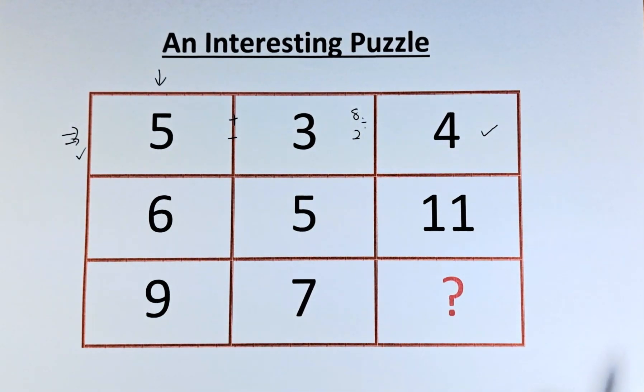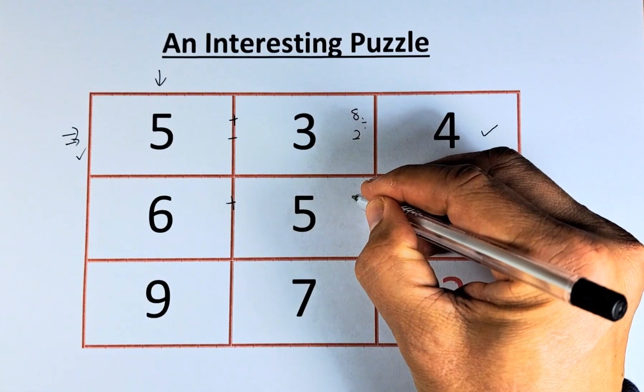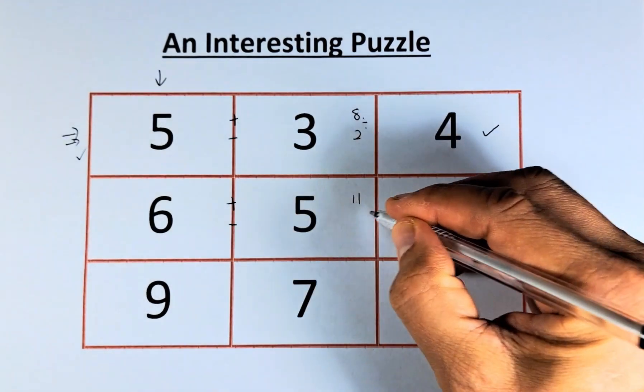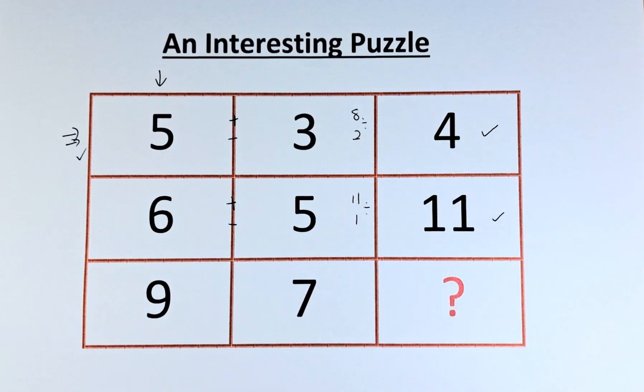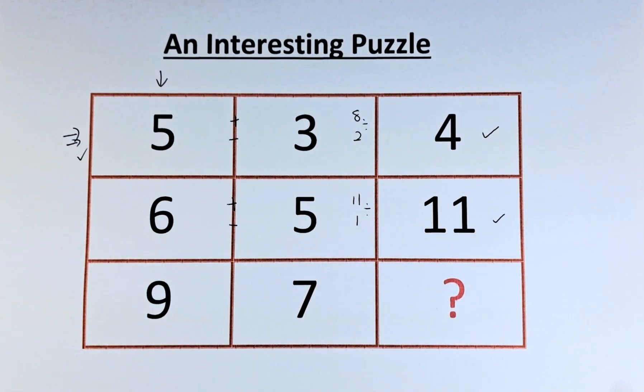Similarly, for the second row, 6 plus 5 is going to be 11. 6 minus 5 is going to be 1. 11 divided by 1 is going to be 11. So what is the number that is represented by the question mark?